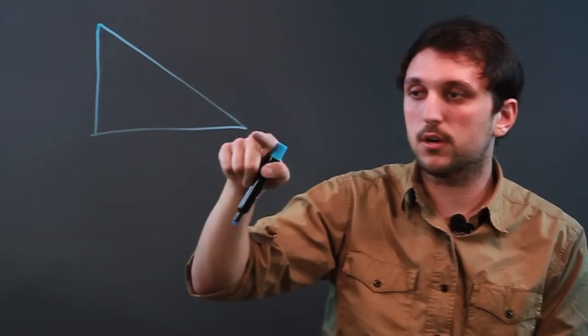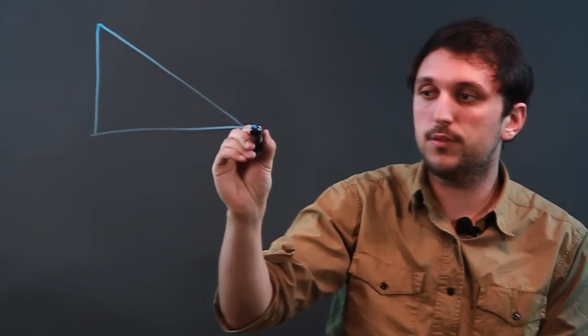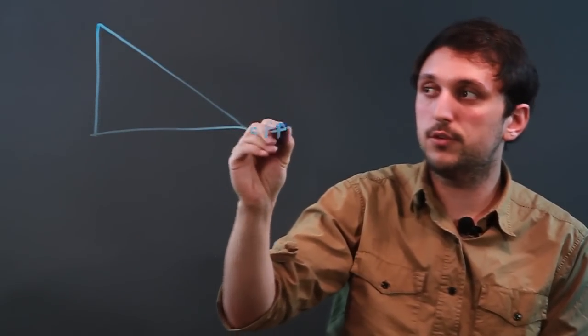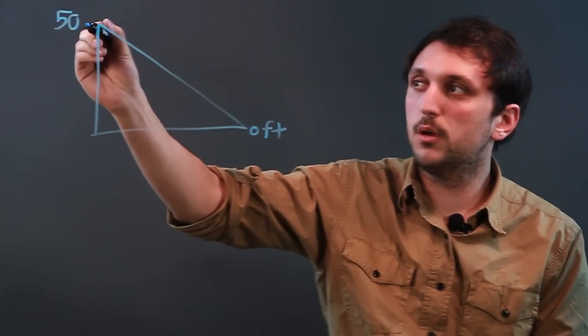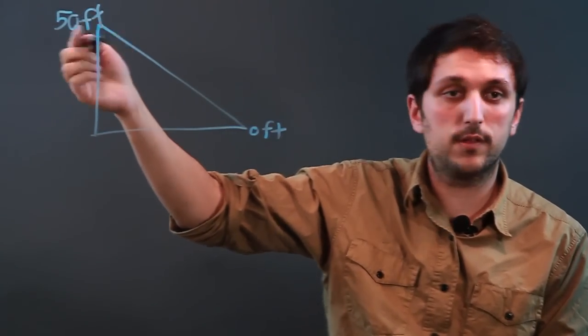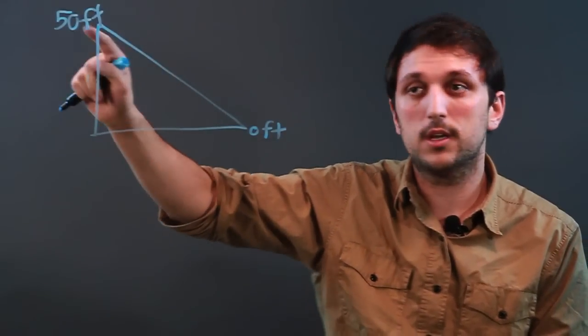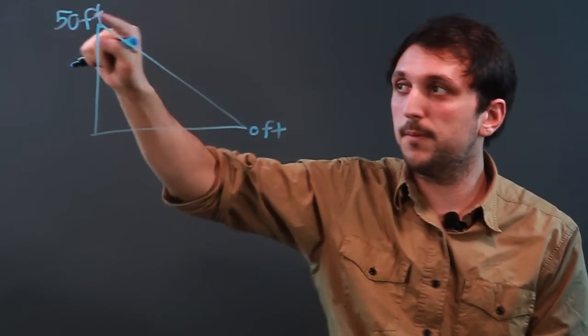So let's start with, let's say we have a mountain top. We know that Jack starts at the bottom of the mountain, 0 feet altitude, and he wants to get up to the top of this mountain, which we're going to say is 50 feet. I know that's a hill, not a mountain, but go with it. So we have to go up 50 feet.